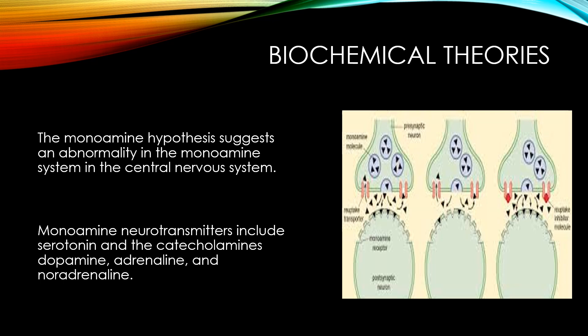In depression, other neurotransmitters like dopamine, adrenaline, and noradrenaline are also decreased. In mania, the opposite occurs — there is an increase in dopamine. In the synapse, between the pre-synaptic and post-synaptic membrane, there is an increase in these neurotransmitters, giving rise to symptoms of bipolar mood disorder. Remember these neurotransmitters because treatment will focus on them — biochemical theories are very important.